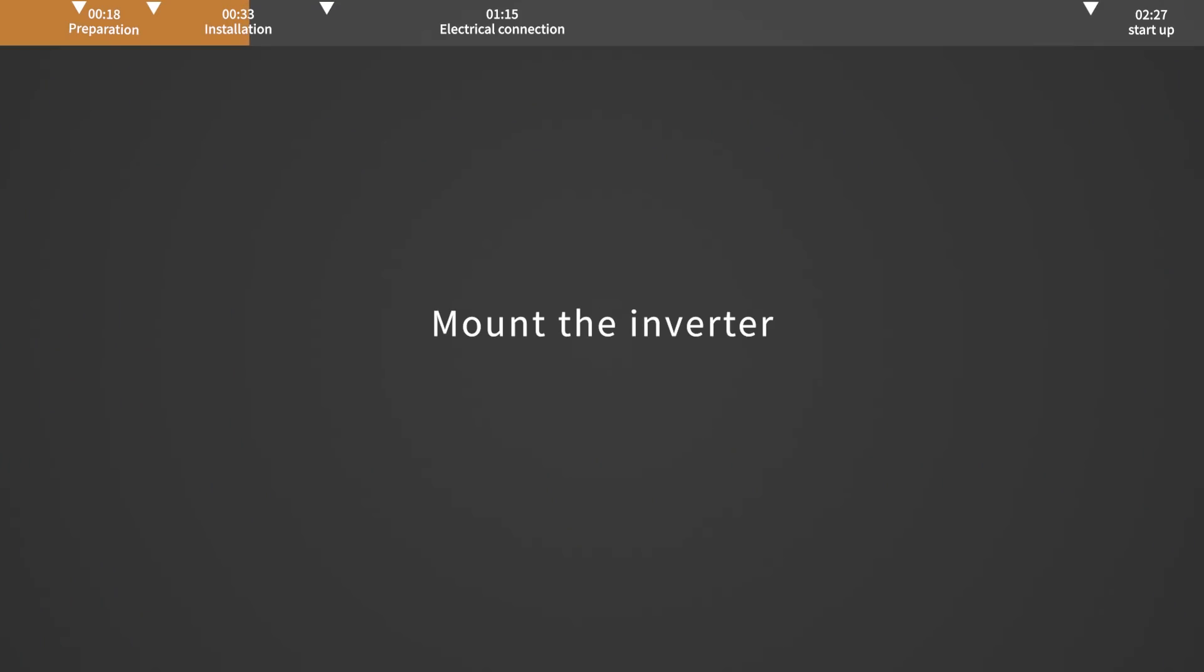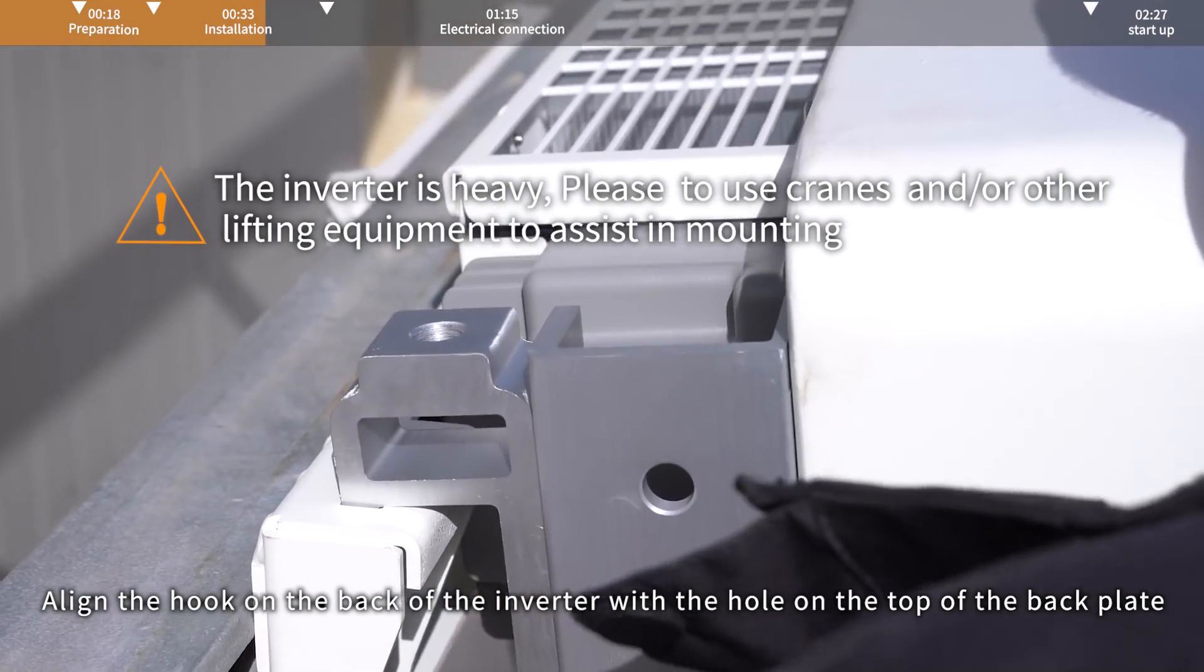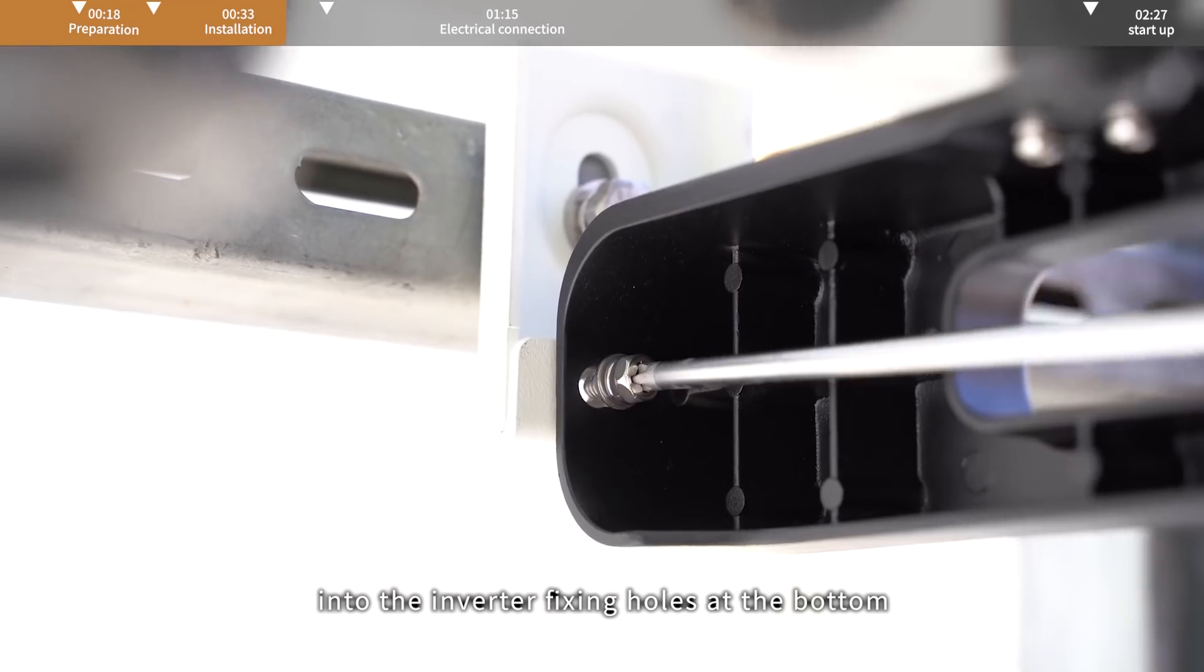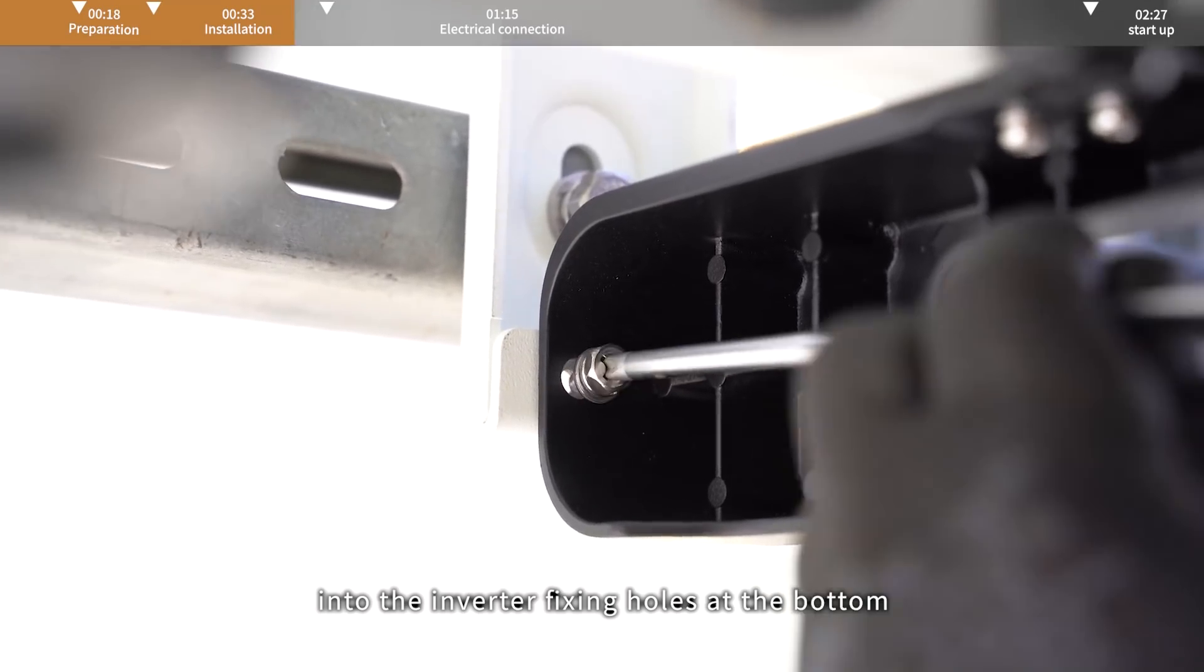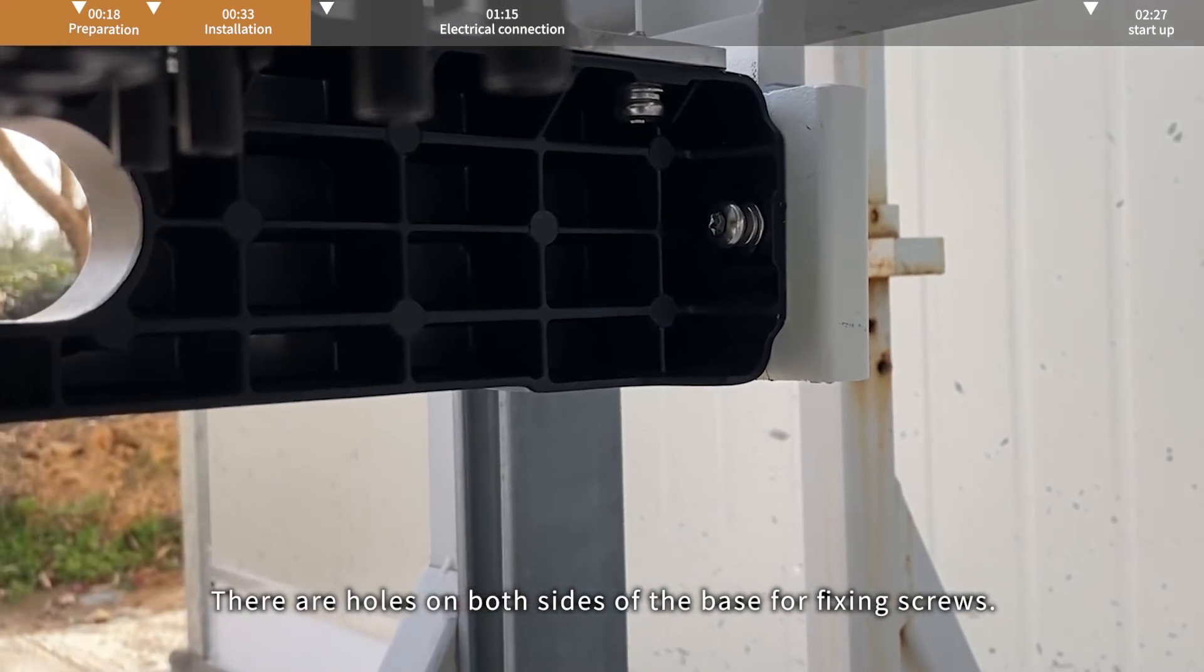Mount the inverter. Align the hook on the back of the inverter with the hole on the top of the back plate. Screw the fixing screws included in the package into the inverter fixing holes at the bottom. There are holes on both sides of the base for fixing screws.